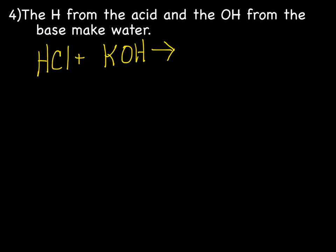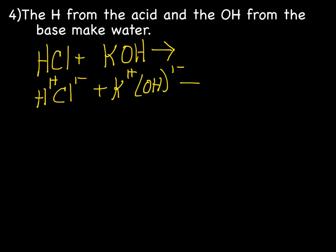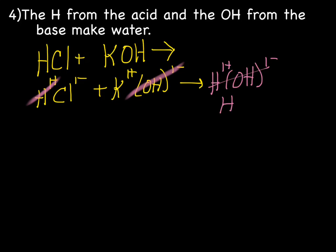The H from the acid and the OH from the base make the water. The acid is made up of H 1+ and Cl 1−. The base is made up of K 1+ and OH 1−. The H 1+ and OH 1− combine — which is neutral — forming H, O, and H, so we can write that as H2O.